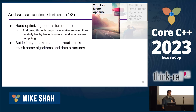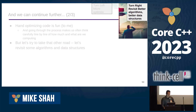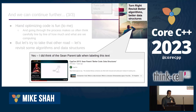We can continue hand-optimizing further, but I'll revisit this when talking about compile-time optimizations. It's handy to know these optimizations so you don't have to write code doing sub-expression elimination by hand — readability is an important trade-off. I could stay on hand-tuned micro-optimizations, but let's take the right turn toward better algorithms and better data structures.